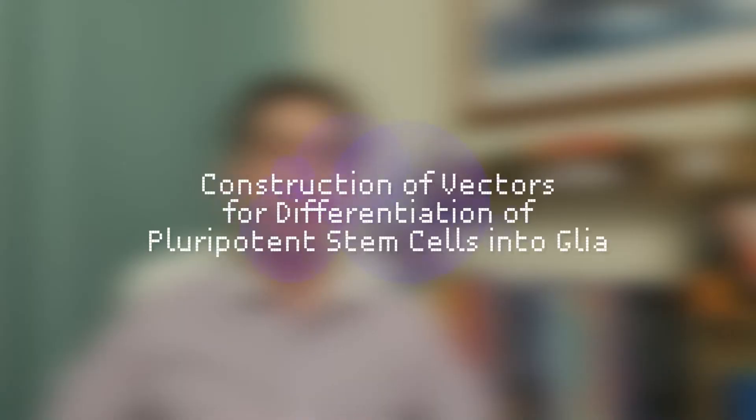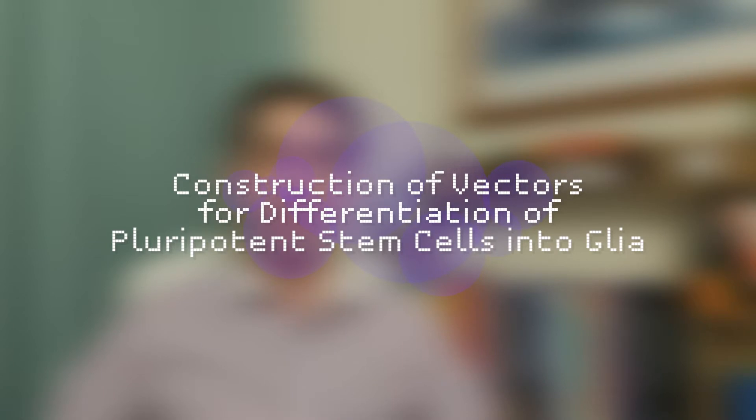Hi everyone, my name is Joshua Nichols and I'm a neuroscience and biochemistry student who undertook a project which auspiciously conjoined my two majors: Construction of vectors for differentiation of pluripotent stem cells into glia.